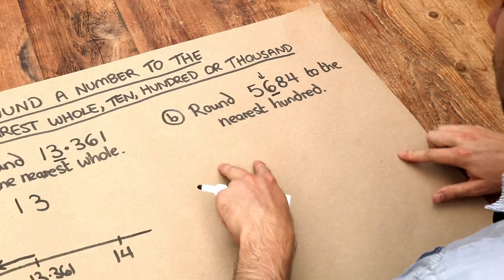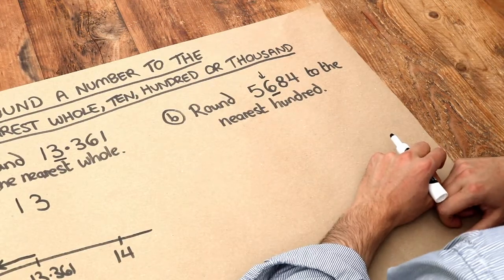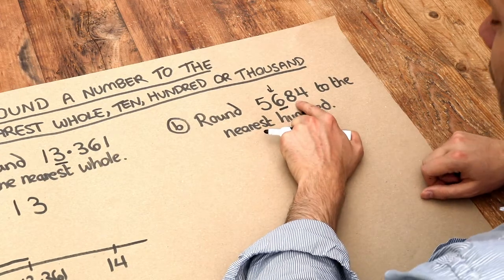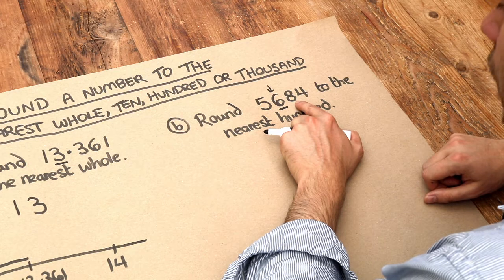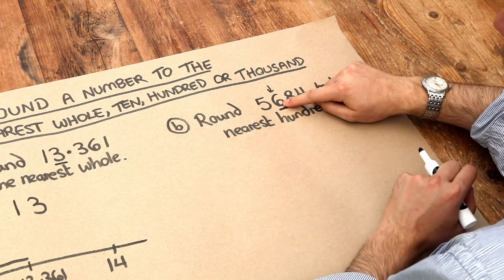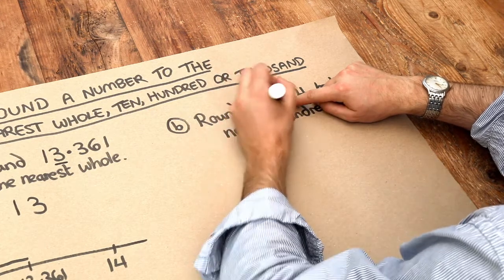What about this one? We want to round this to the nearest hundred. So we've identified the hundreds digit and underlined it, and then we look at the digit after. Is that 5 or more? Yes, it is, and therefore that 6 goes up to 7. So we've got 5, 7.